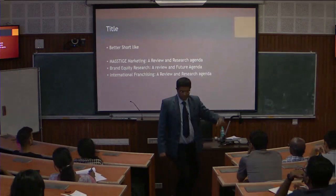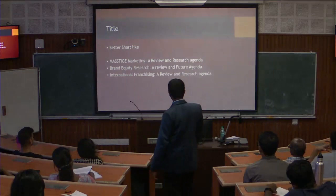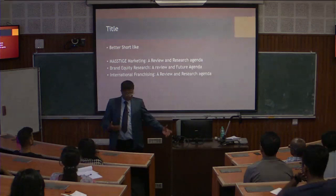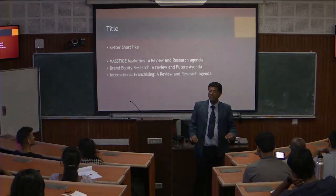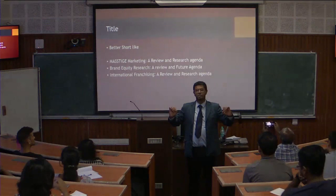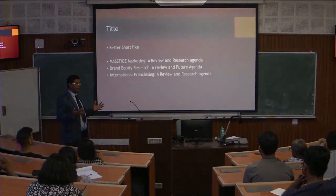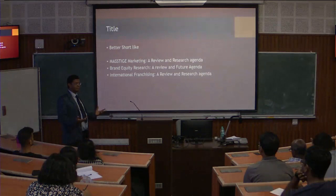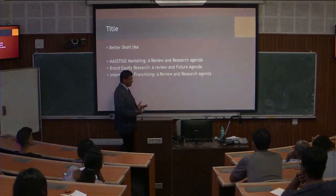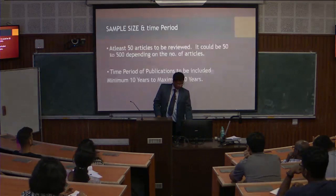Instead of 'research agenda' in the title, you can also use 'directions for future research,' but 'research agenda' is more crystal clear. One purpose of a review article is to highlight research gaps and provide directions for future research with reference to methods, constructs, variables, context, and theories. If you are unable to provide clear directions for future research, your review article will not get cited and will not be useful for others. You have to really find out research gaps and set future research agenda.